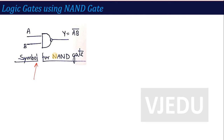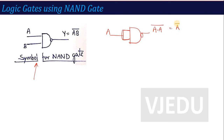To realize NOT using NAND: if you put a single input A into a NAND gate (both inputs tied together), the output is (A·A)̄, and by Boolean law A·A = A, so this becomes Ā. So a NAND gate with both inputs tied is an inverter.